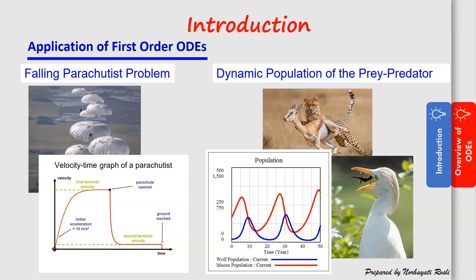These are the applications of first order ODE. The first one is the problem of the falling parachute. The velocity-time graph of the parachute — to get this graph, you need to solve an ordinary differential equation representing this problem, in terms of dy/dx and y, where y is the velocity and x is the time. When you solve that ODE, you can get the pattern of the velocity as time increases.